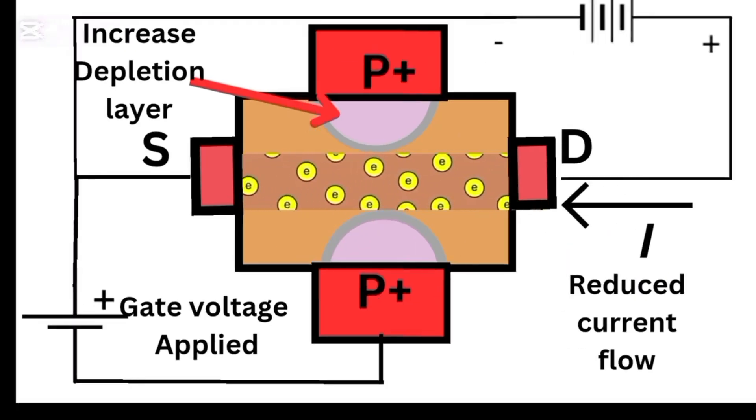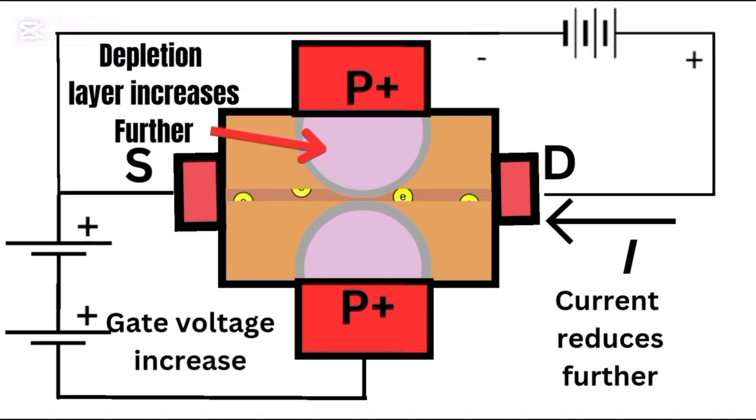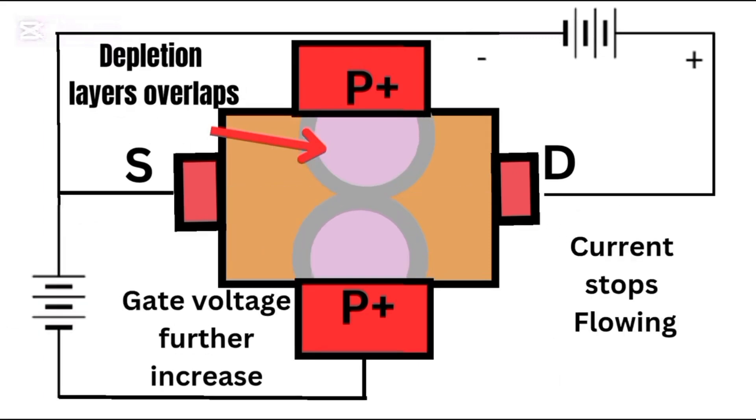Now if you make VGS negative, the current reduces. Why? Because you're depleting the channel, narrowing it, until it eventually cuts off. This region is called the depletion region.